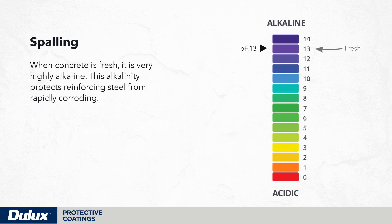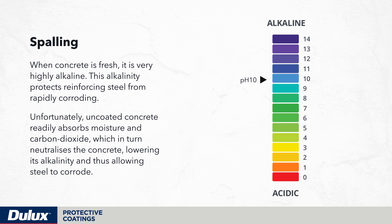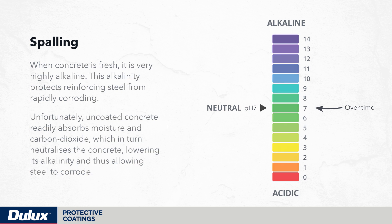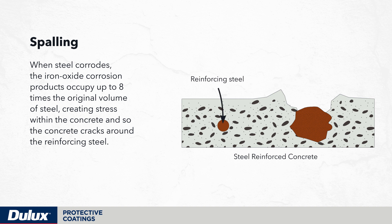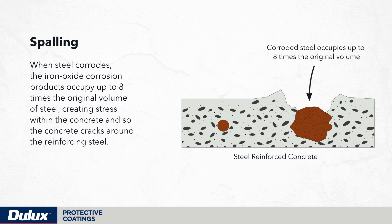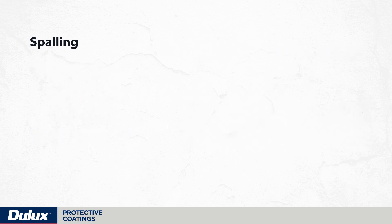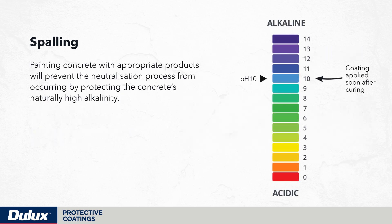When concrete is fresh it is very highly alkaline. This alkalinity protects reinforcing steel from rapidly corroding. Unfortunately, uncoated concrete readily absorbs moisture and carbon dioxide which in turn neutralizes the concrete, lowering its alkalinity and thus allowing steel to corrode. When steel corrodes, the iron oxide corrosion products occupy up to eight times the original volume of steel, creating stress within the concrete and so the concrete cracks around the reinforcing steel. Painting concrete with appropriate products will prevent the neutralization process from occurring by protecting the concrete's naturally high alkalinity.